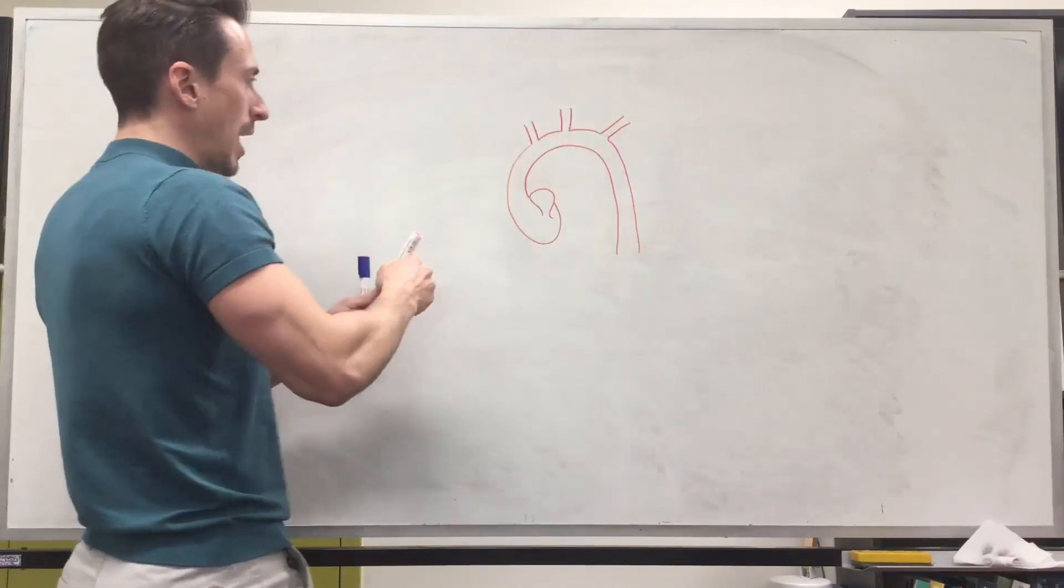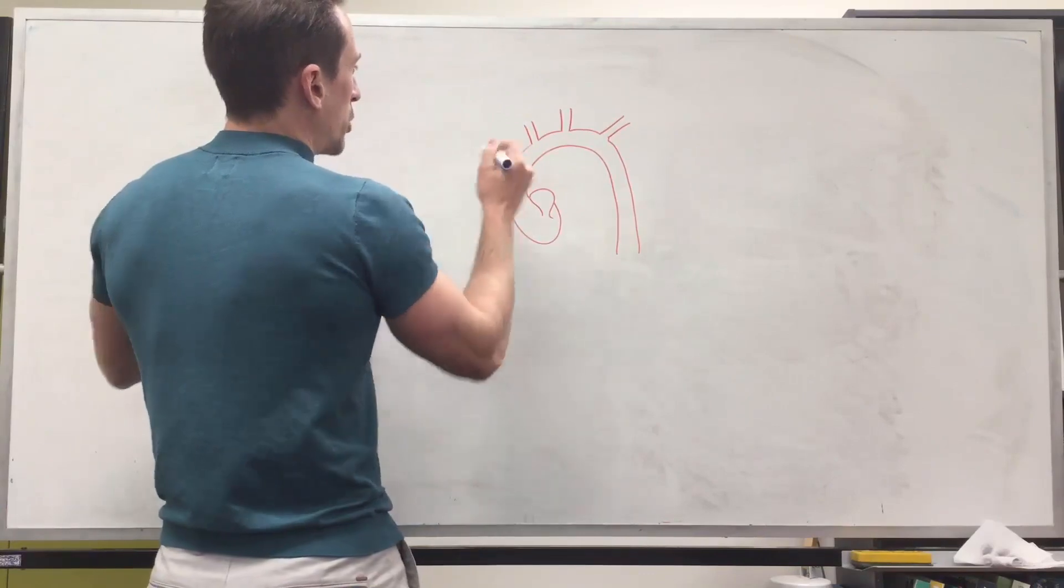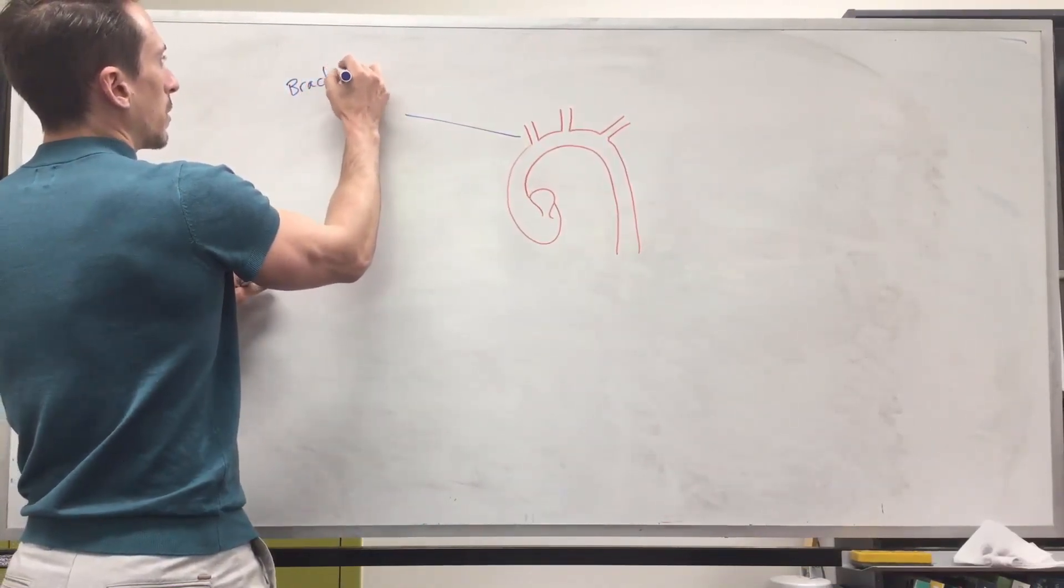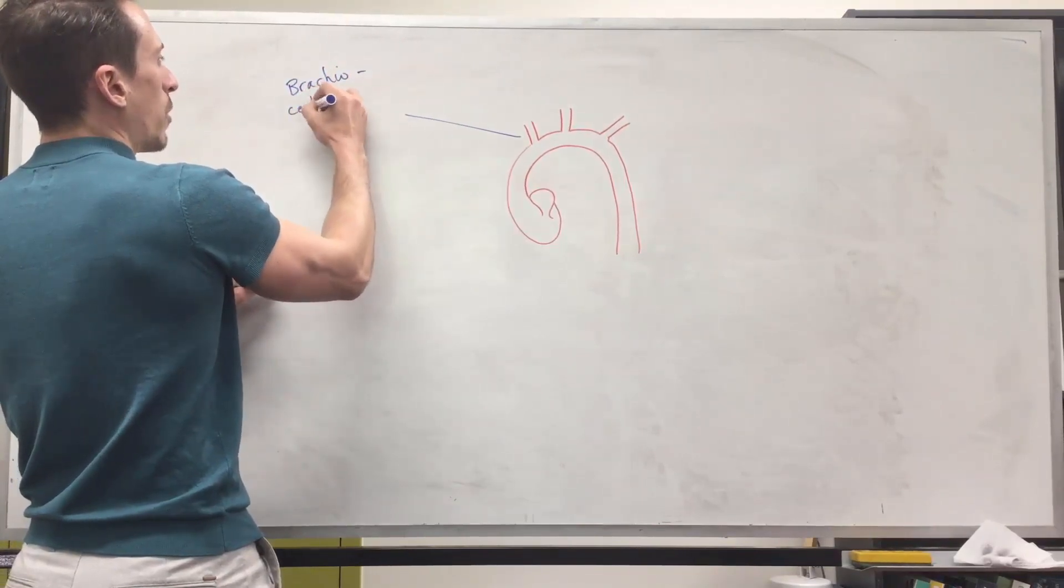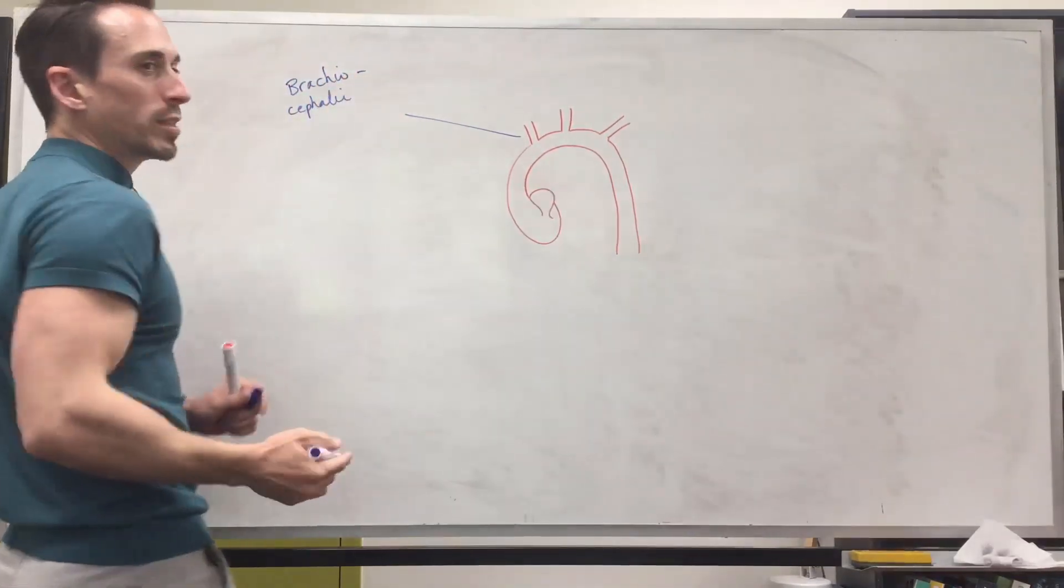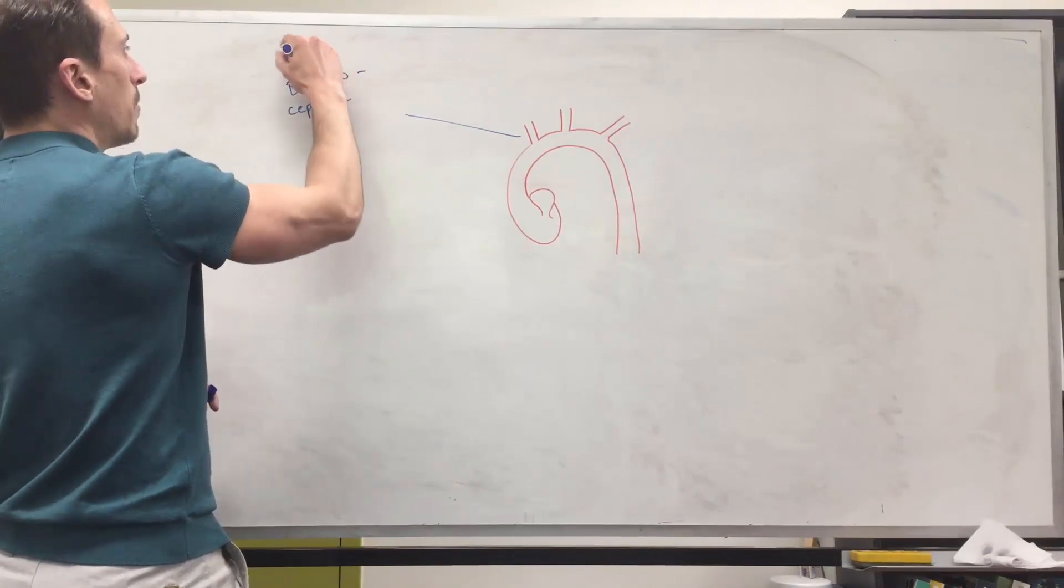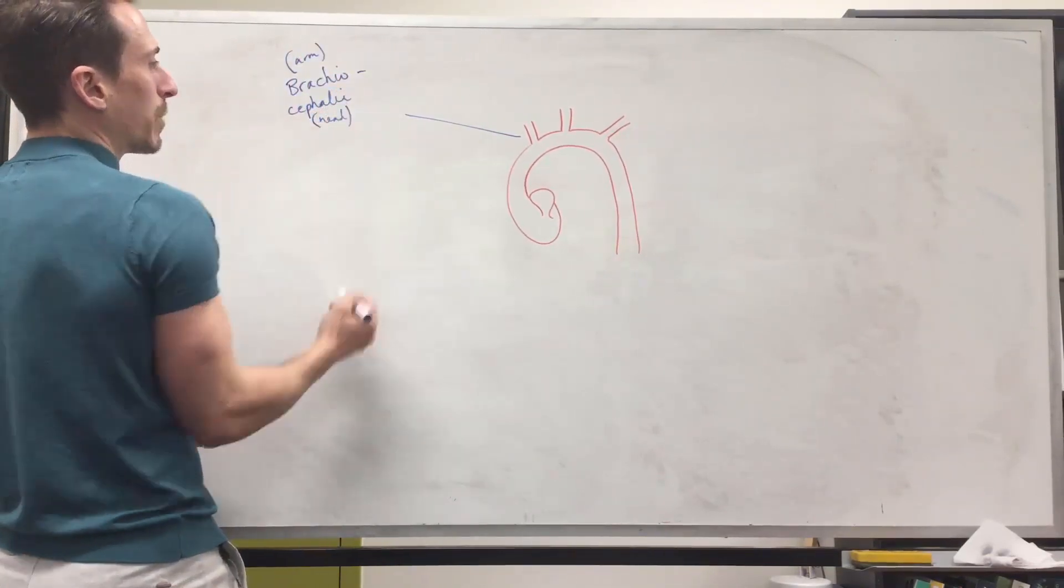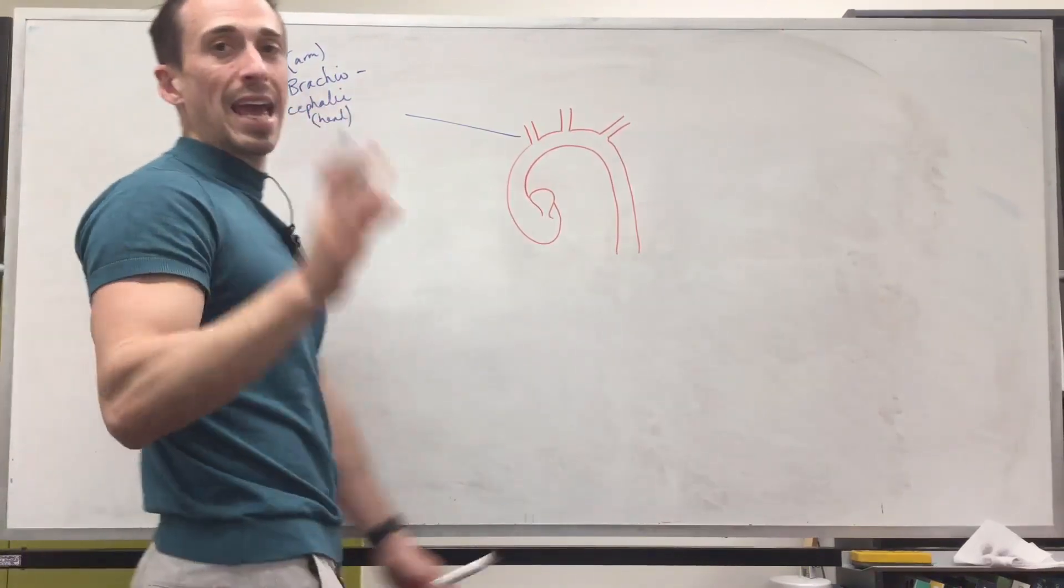These three branches are, this first branch here is what we term the brachiocephalic. Now the reason why it's called the brachiocephalic, there's two words here: brachio which means arm and cephalic which means head. So this blood vessel is going to go and feed the head and the arm.